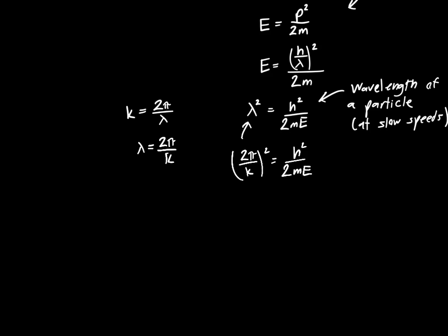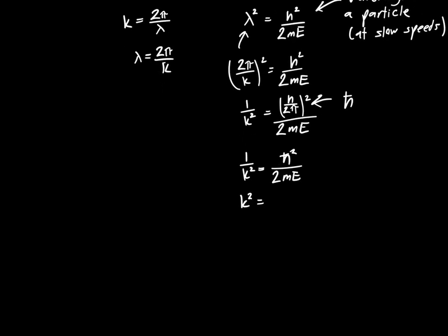Or we can divide by 2pi, and we get 1 over k squared, or 2pi squared, equals h over 2pi squared divided by 2mE. And remember, we just said this was h bar, and this is why we use h bar, because we like to use the wave number, k, instead of the wavelength, lambda. So we get 1 over k squared is just h bar squared divided by 2mE. Or k squared is equal to 2mE divided by h bar squared.